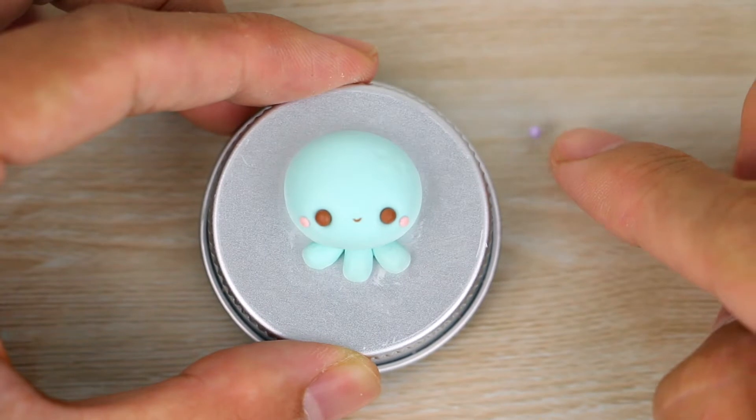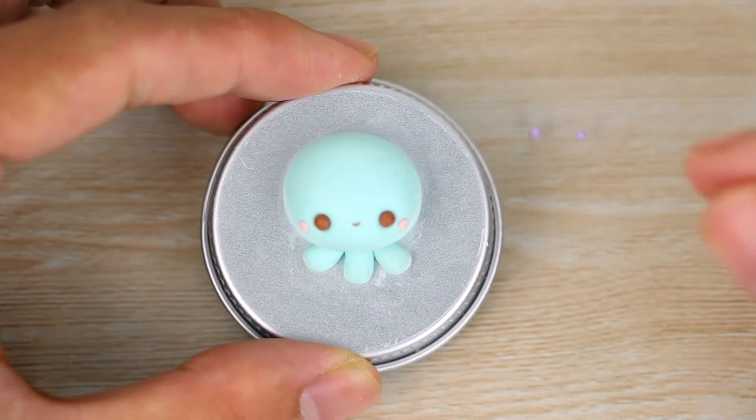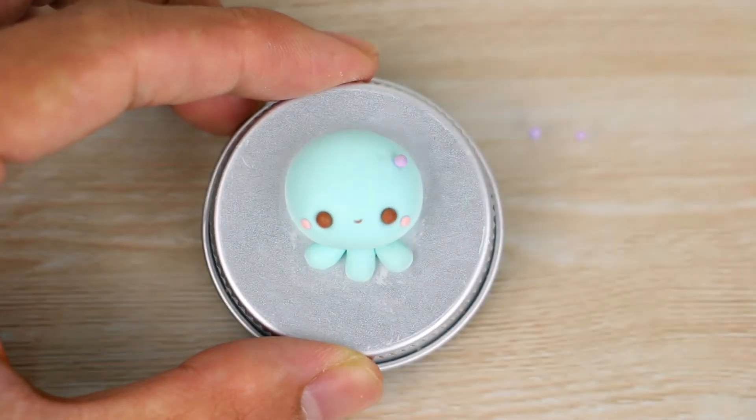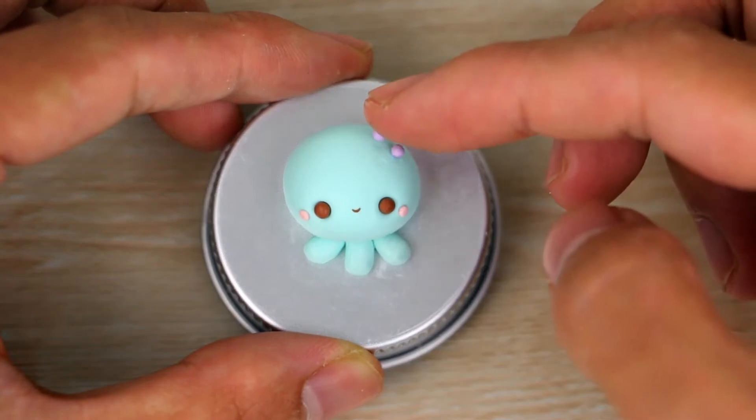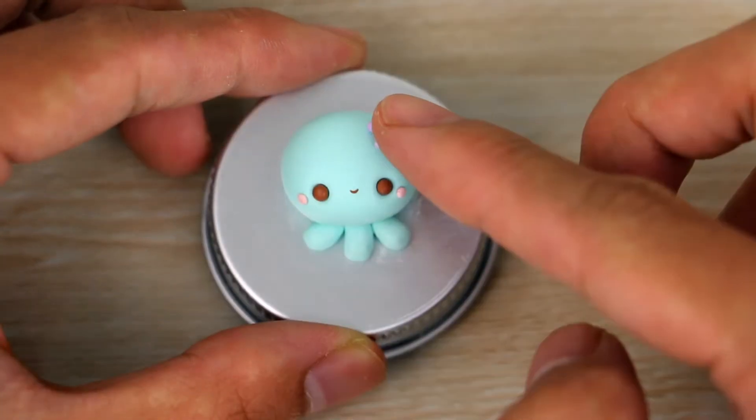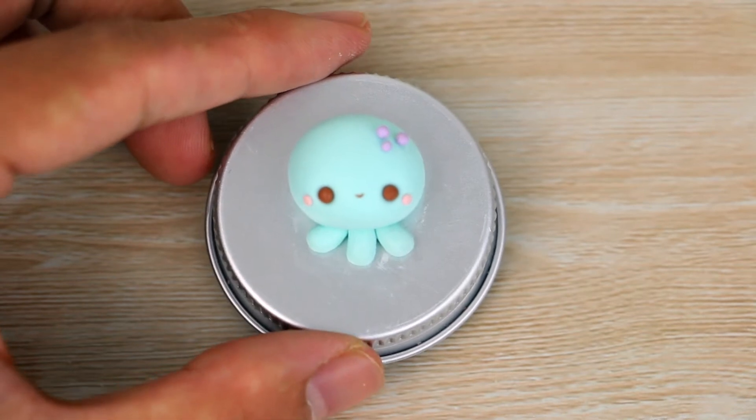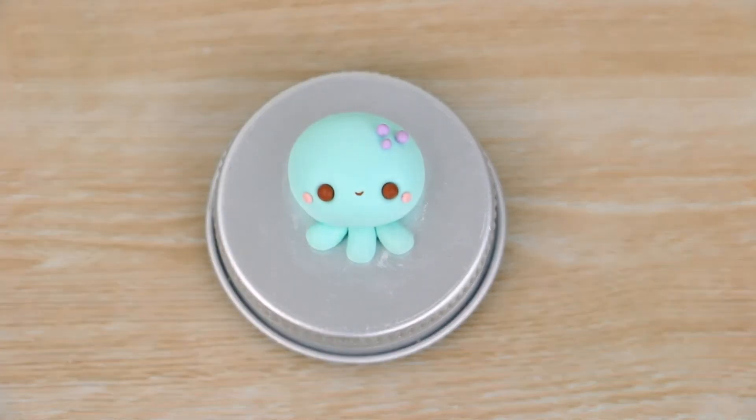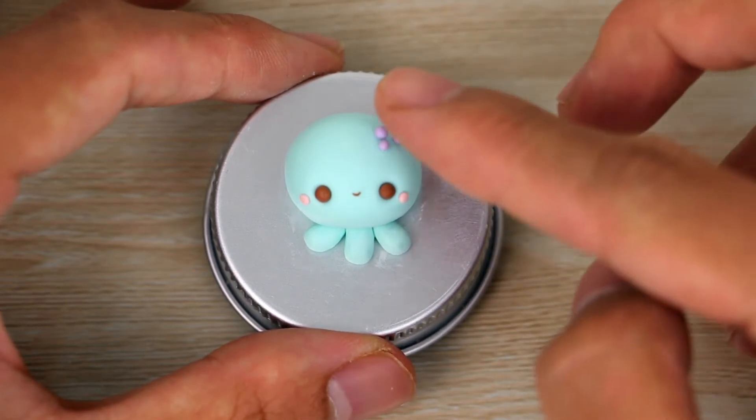I then added some pink balls for the cheeks and on go three little purple balls for the little freckles, just placing those onto the right side of the head, and then just flattening those down just a little tiny bit.